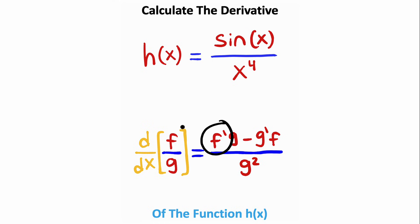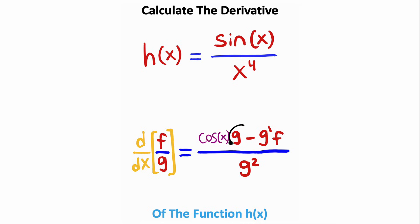Now, f prime, that's going to be the derivative of the top of the fraction, which in this case is the derivative of sine. The derivative of sine is cosine. Now, g corresponds to the bottom of the fraction, which is just x to the fourth power. Now, we're going to subtract off the derivative of g, which is the derivative of the denominator. The derivative of x to the fourth, we can find by using the power rule. Doing this, you should get 4x to the third power. This is then multiplied by f, which is just the sine of x.